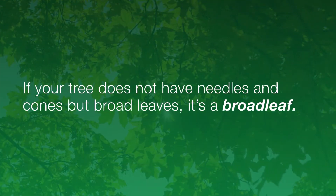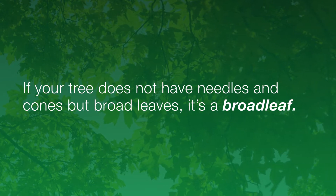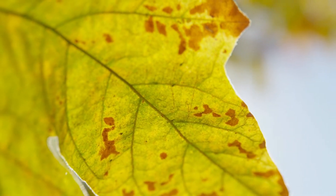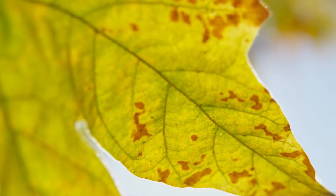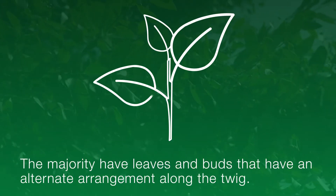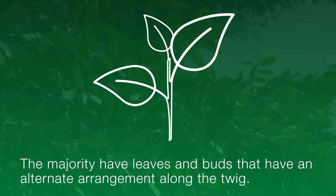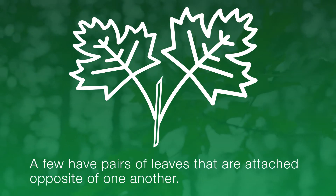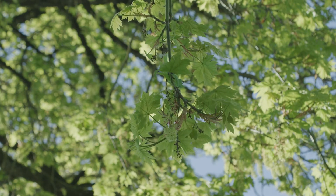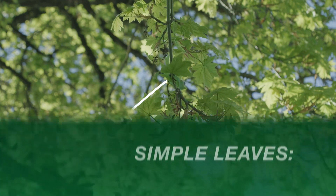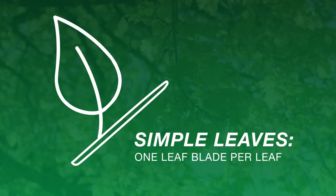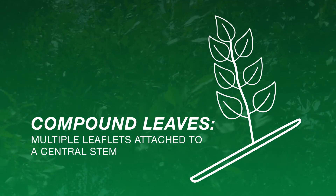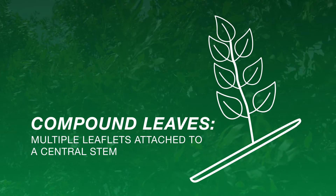If your tree does not have needles and cones but broadleafs, it is, you guessed it, a broadleaf. For the most part, broadleaf trees can be divided into two groups based on leaf arrangement. The majority have leaves and buds that have an alternate arrangement along the twig. A few have pairs of leaves that are attached opposite of one another. Another helpful identification characteristic is distinguishing between simple leaves — meaning one leaf blade per leaf — and compound leaves with multiple leaflets attached to a central stem known as the petiole, attached to the twig.